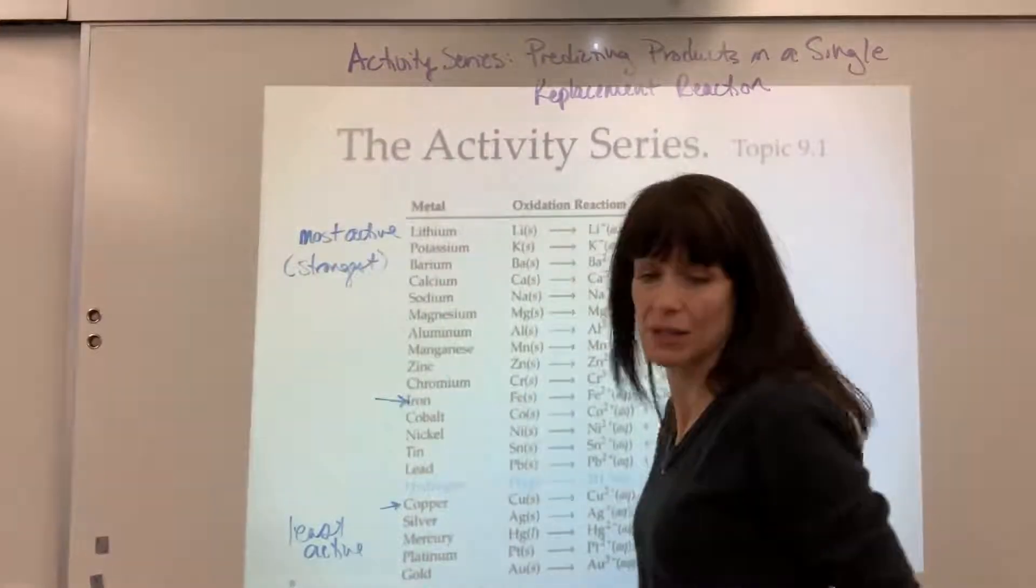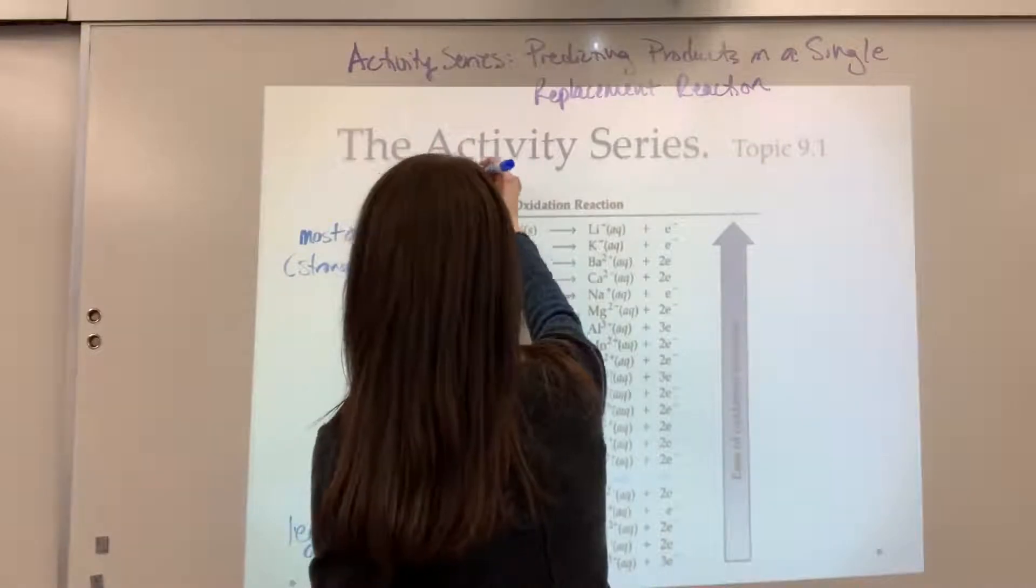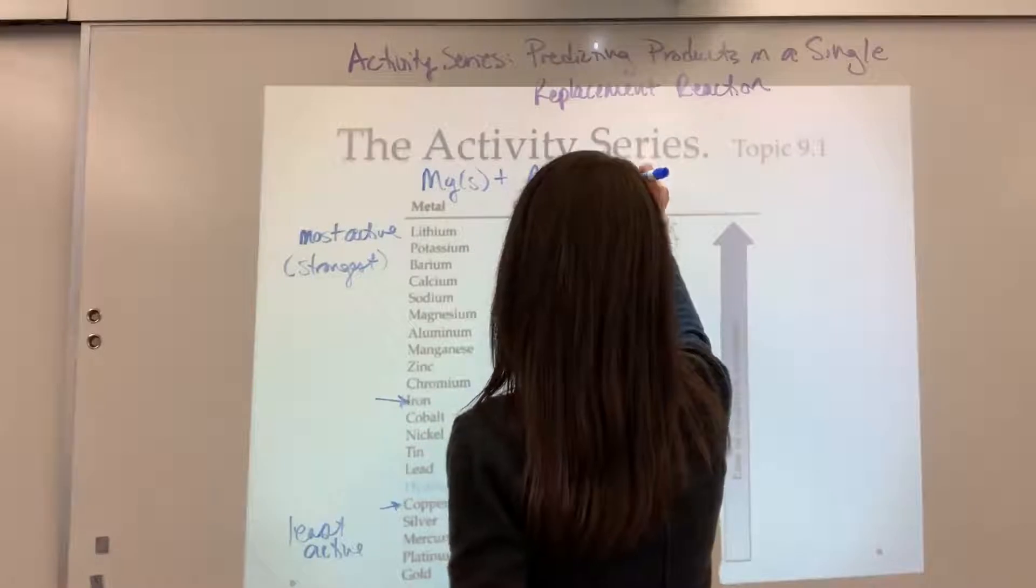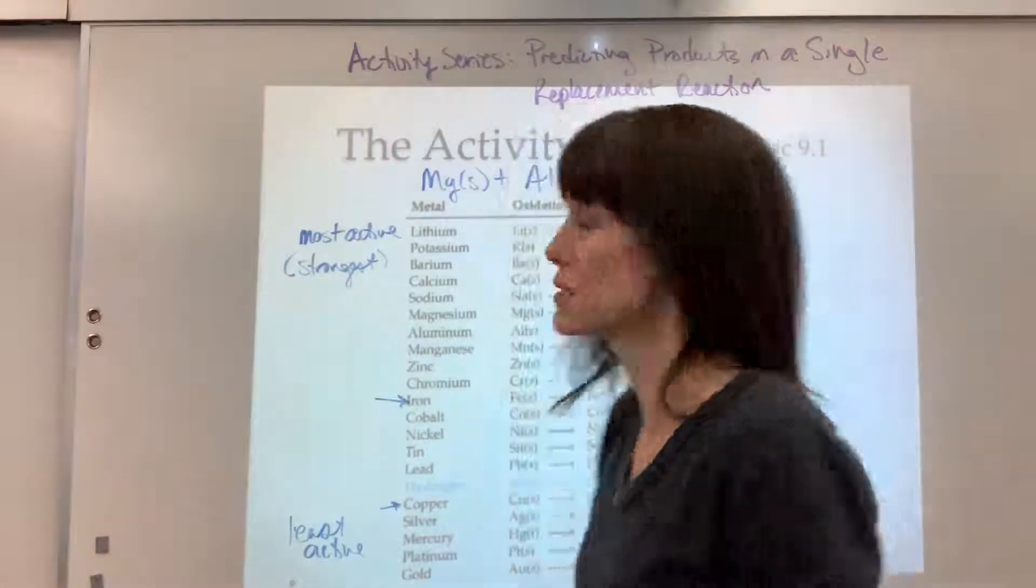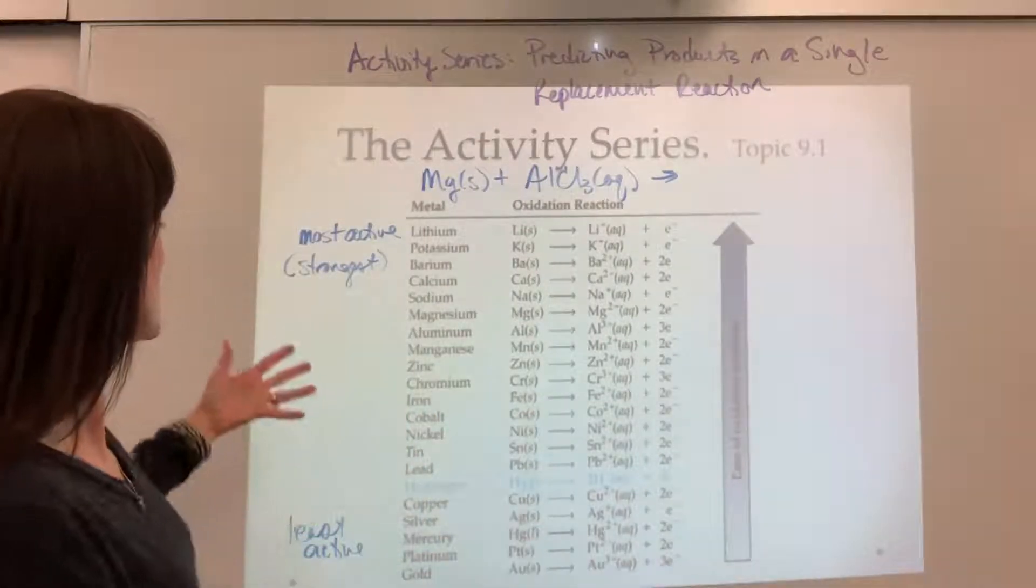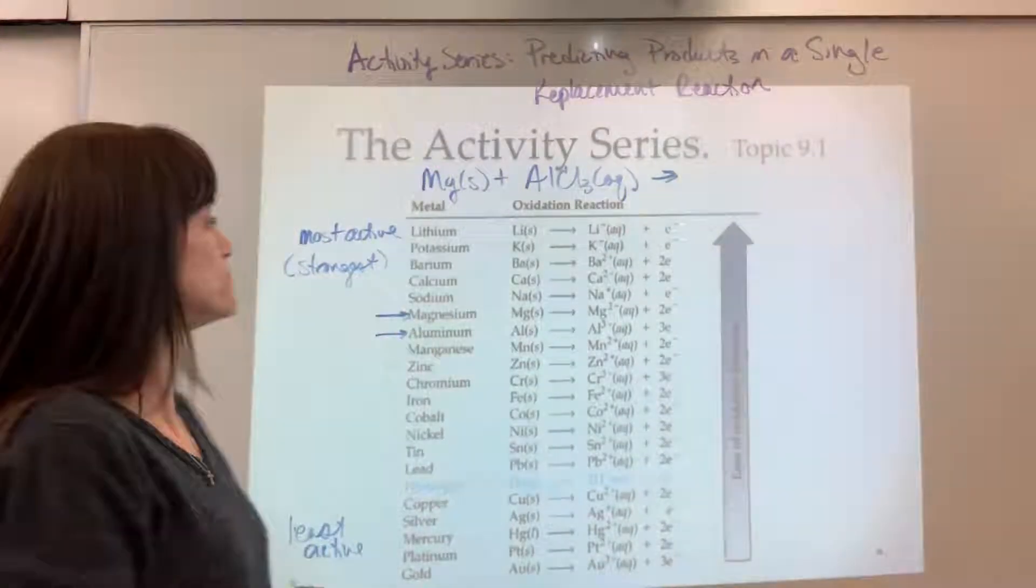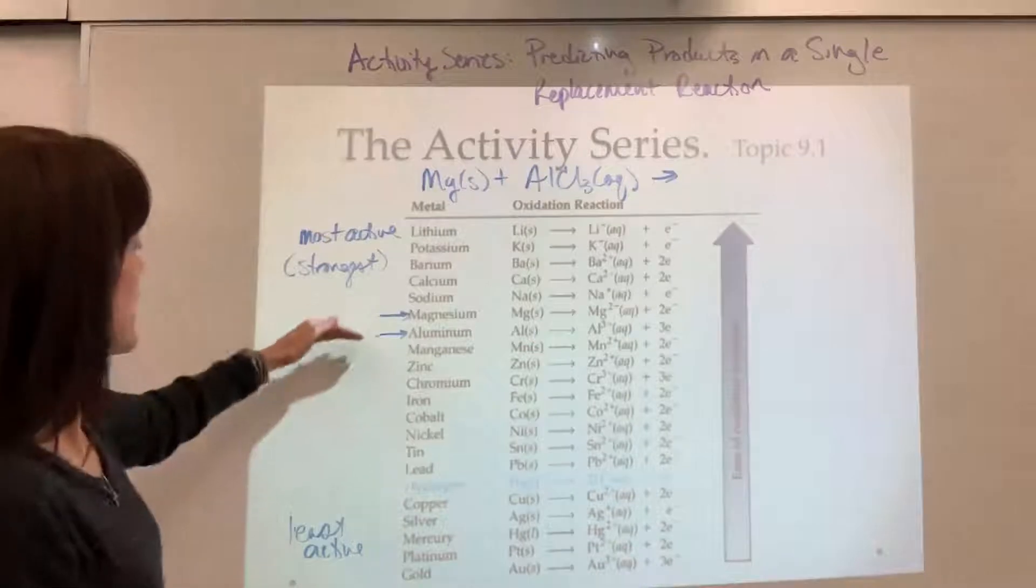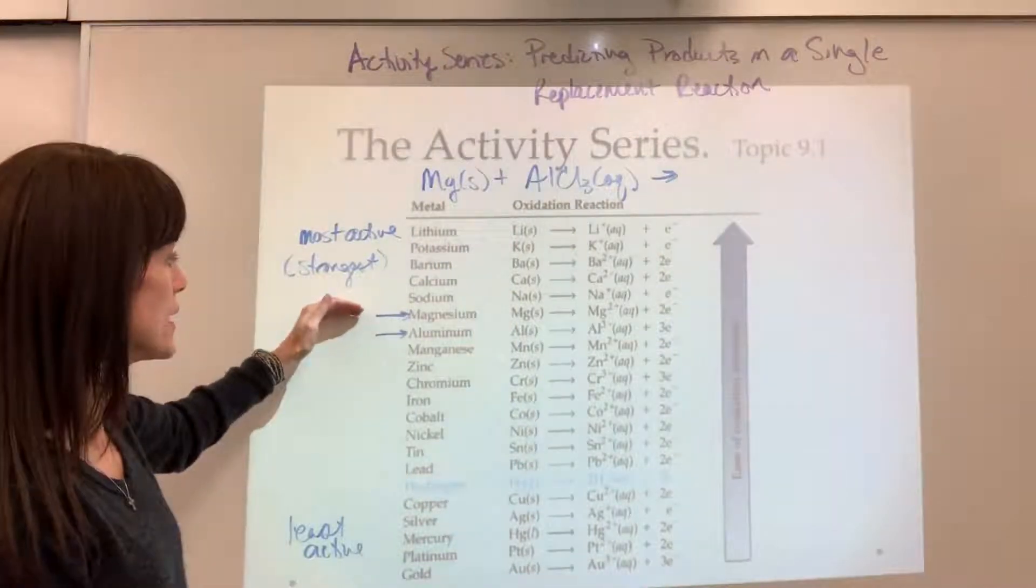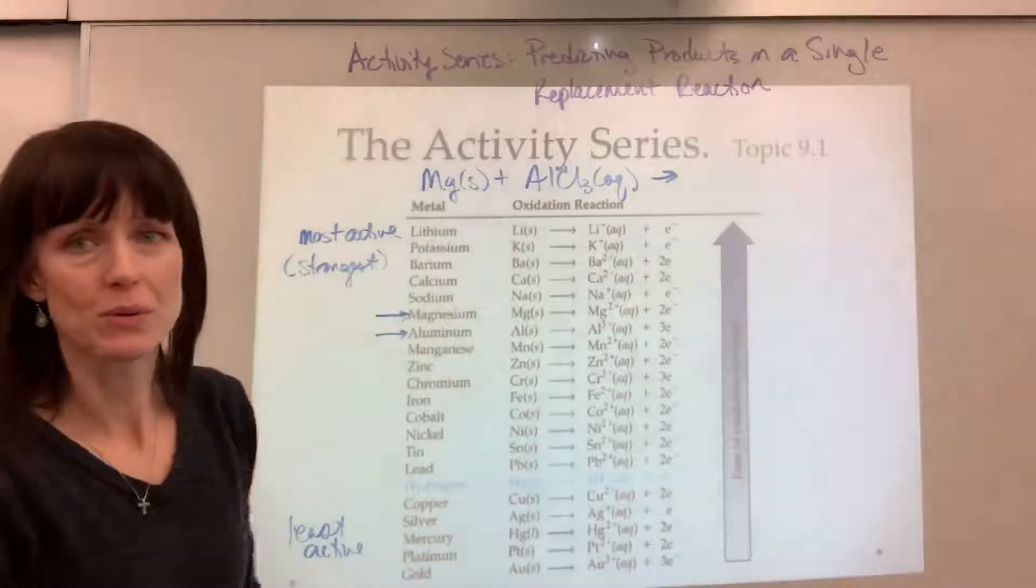We are going to take magnesium metal, Mg solid, plus aluminum chloride aqueous, AlCl3, and we want to predict the products. Let's find our magnesium and aluminum. There's aluminum, and magnesium is right by it. Magnesium is above the aluminum, so it's stronger, it's more active.